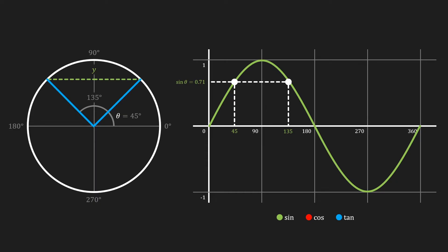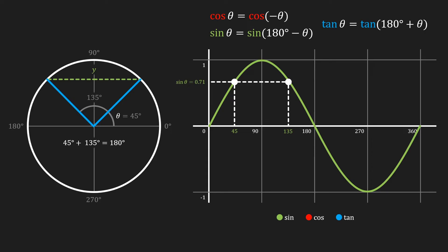The arcsine function will always return just one of these possible values — an angle between negative 90 and 90 degrees that corresponds to the given sine. In this case the returned angle is 45 degrees. However, there is a relationship between these two angles which allows us to calculate the second possible outcome: these angles are each other's supplement, meaning their sum is equal to 180 degrees. We can therefore say that the sine of theta is equal to the sine of 180 degrees minus theta. The cosine function has a similar property: the cosine of theta equals the cosine of negative theta, and the tangent of theta equals the tangent of 180 degrees plus theta.